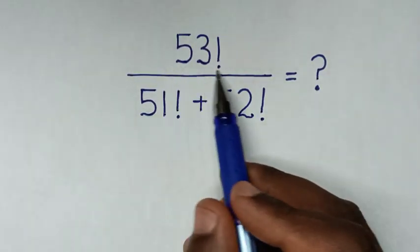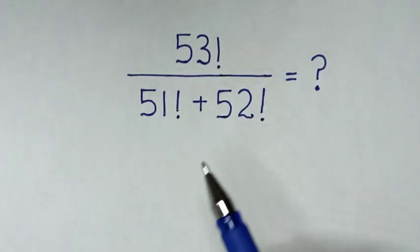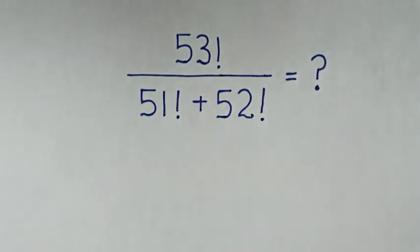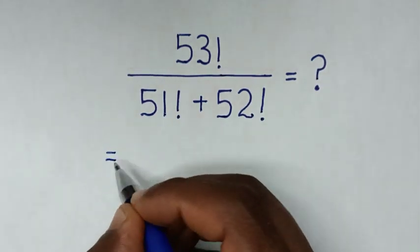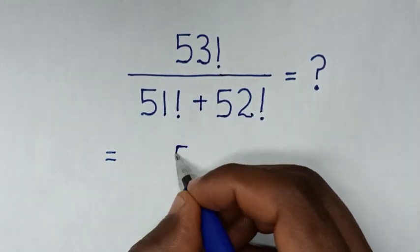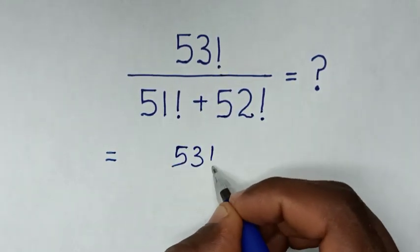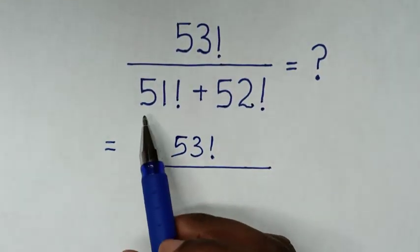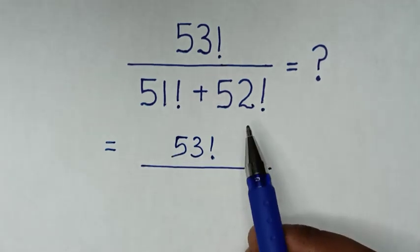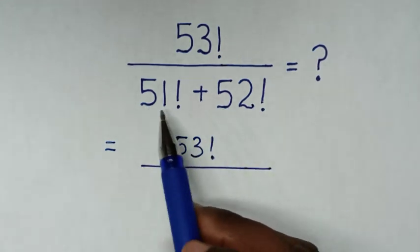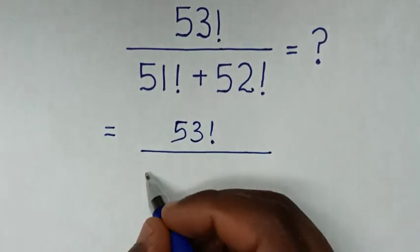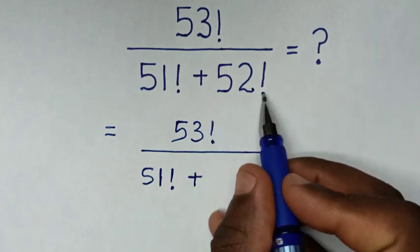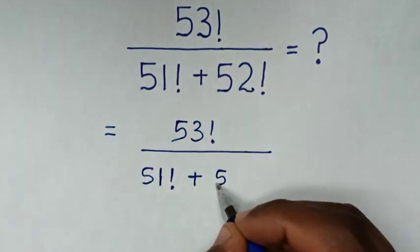How to solve 53 factorial over 51 factorial plus 52 factorial. In the numerator it will be 53 factorial, then over the denominator 51 factorial plus 52 factorial. We factor out 51 factorial from the denominator, giving 51 factorial times (1 + 52).